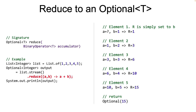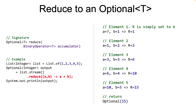Now let's go through the steps as each element of the stream is processed. During the processing, an intermediate variable R is being used to signify the intermediate result. As each element is processed, the intermediate variable R is calculated. When the next element is processed, R from the previous element processing is the value passed to variable A, and the element is passed as the value for B. Then the accumulator function is applied. After we do this for all elements, an optional of the result is returned. Why an optional? Because the number of elements in the list might be zero, in which case there is no result and an empty optional is returned.